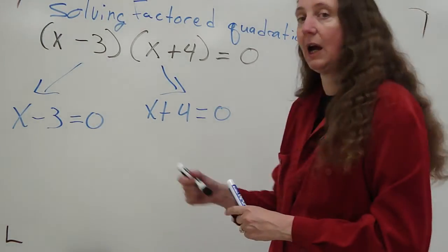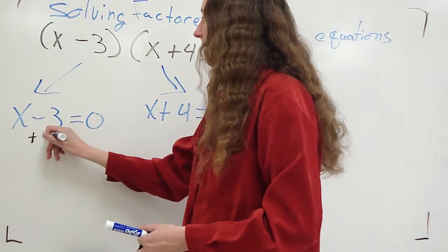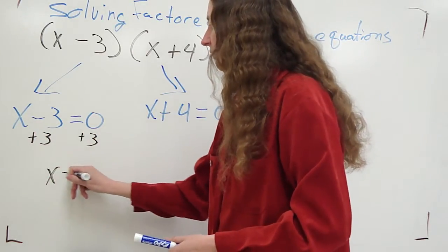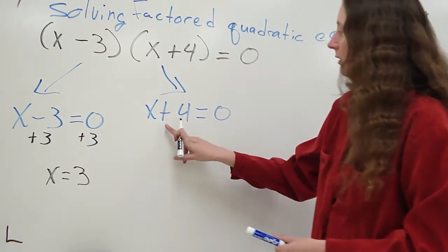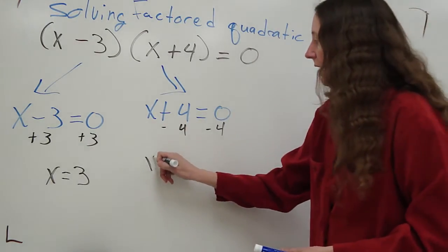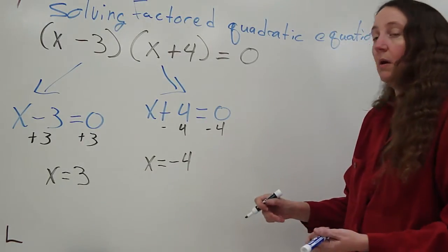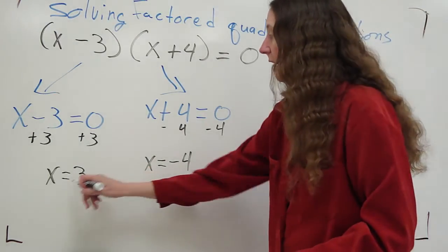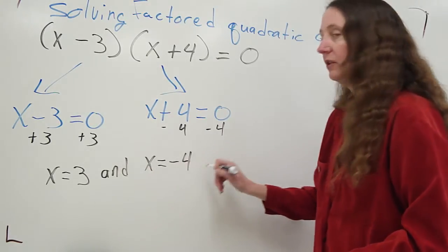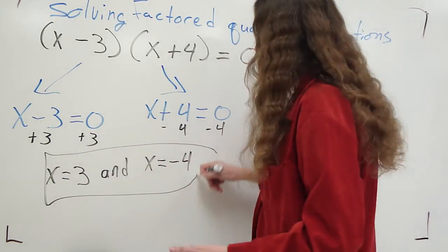Next, I solve for x. Add my three, I get x equals three. Subtract the four, x equals negative four. My answer is x equals three and x equals negative four. Done.